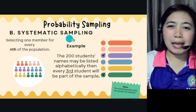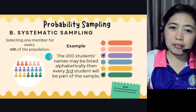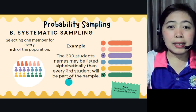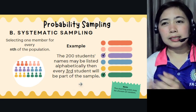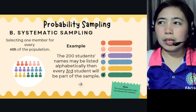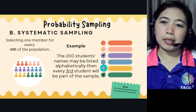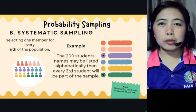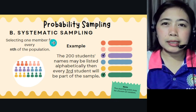Another probability sampling is systematic sampling. It involves selecting one member for every nth member of the population. For example, the 200 students' names may be listed alphabetically, then every third student will be part of the sample. Get the master list from each classroom, arrange alphabetically without sectioning, then select every third name: 3, 6, 9, 12, 15 — and so on. That is called systematic sampling because there is a system being followed.